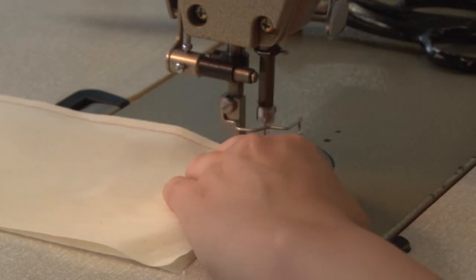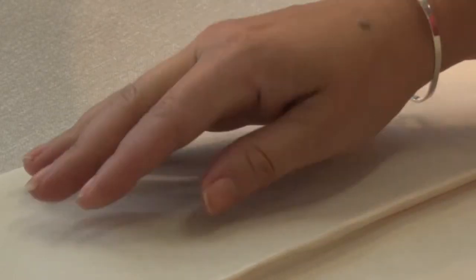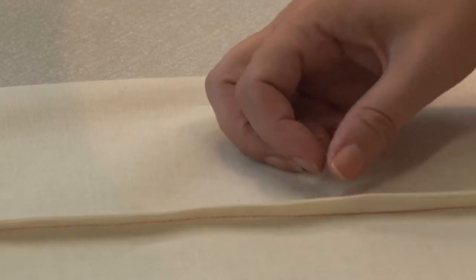Back tack at the end of the seam. Check that there are no raw edges exposed on the right side of the fabric and that the stitch tension is correct on both sides.